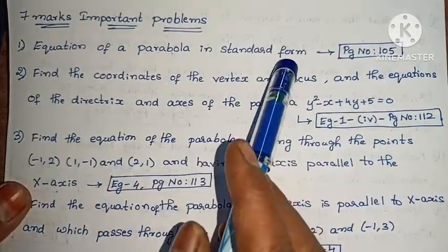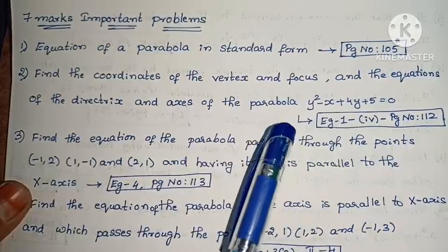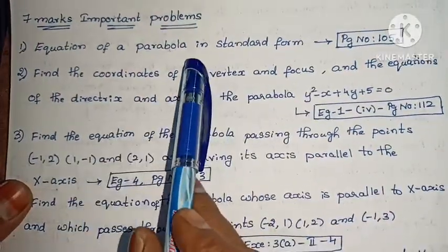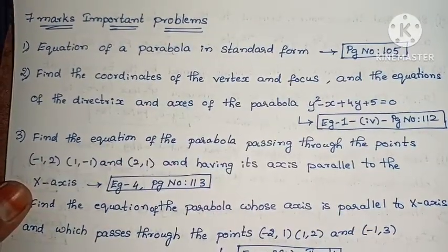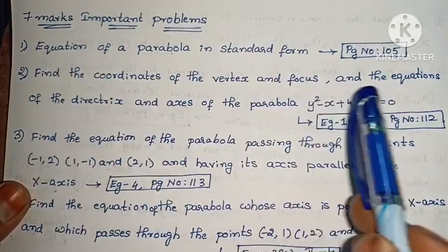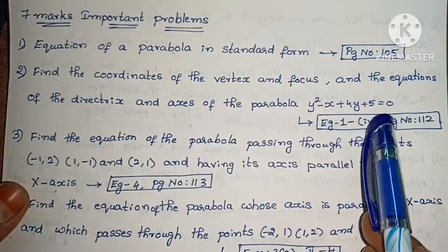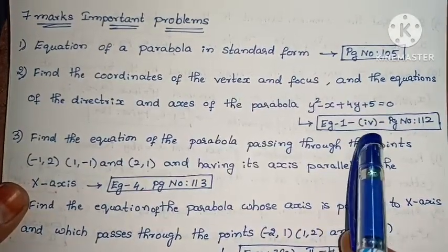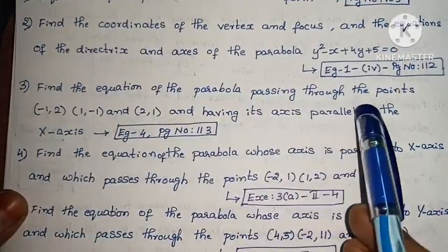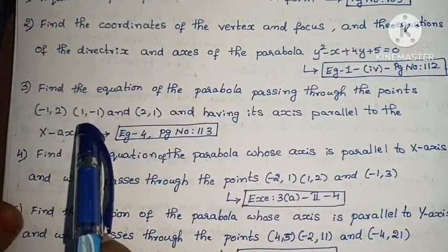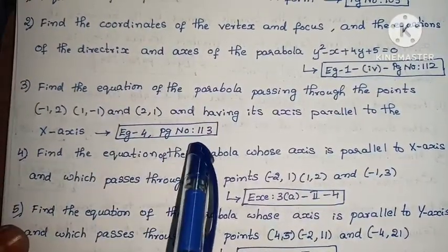The first important problem is the equation of Parabola in standard form: y² = 4x — we will prove this as on page number 1 in the textbook, which I have explained. Next, find the coordinates of the vertex and focus and the equation of the directrix and axis of the parabola y² - x + 4y + 5 = 0. Example 1, fourth sub-problem, page number 112. Next, find the equation of the parabola passing through the points (-1, 2), (1, -1) and (2, 1) having its axis parallel to the x-axis. Example 4, page number 113.